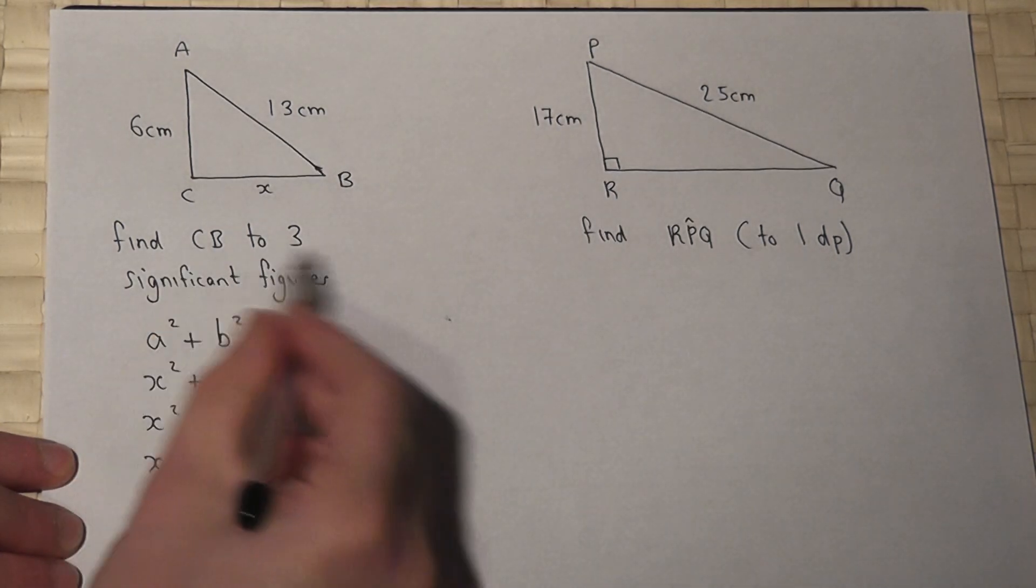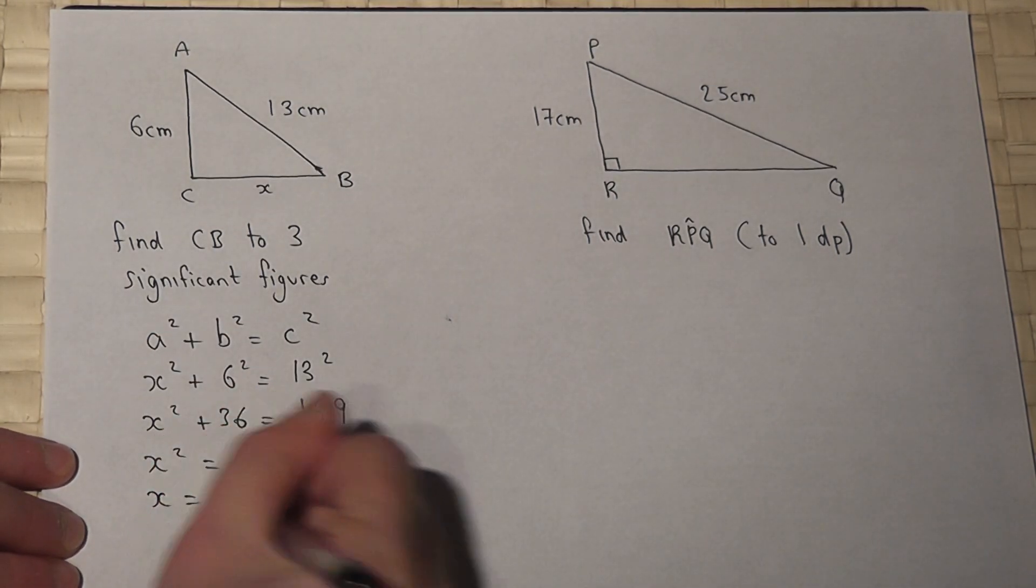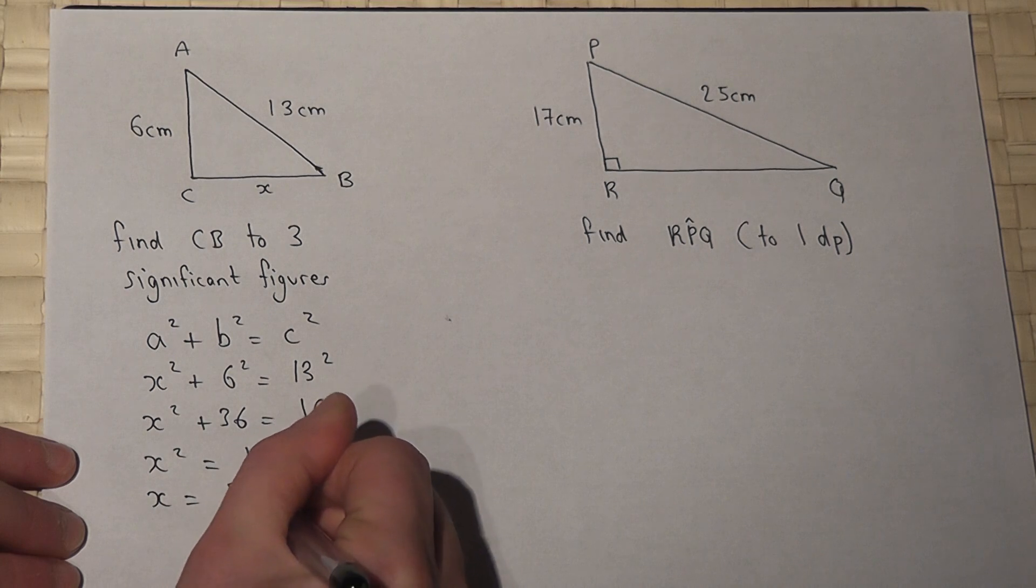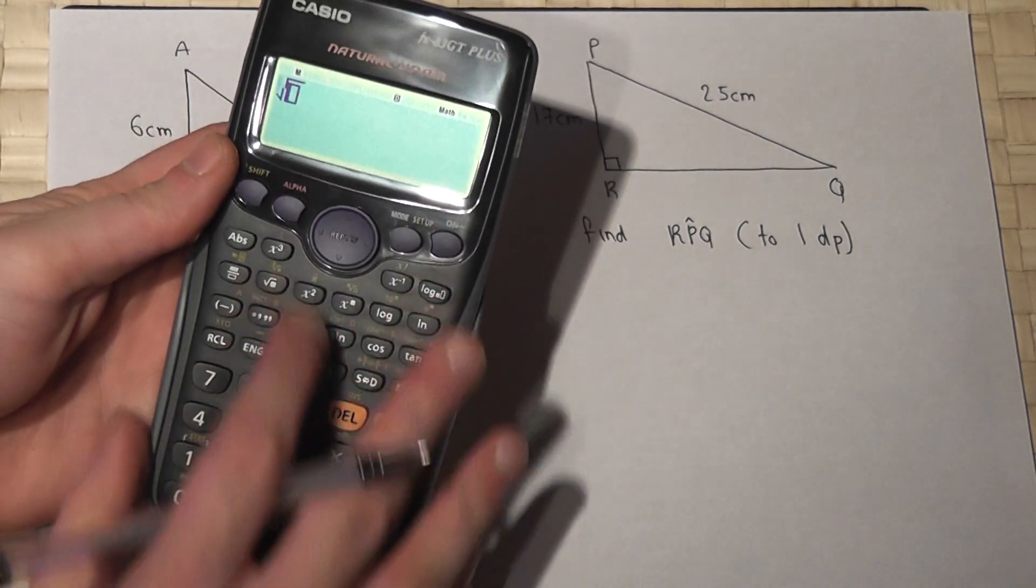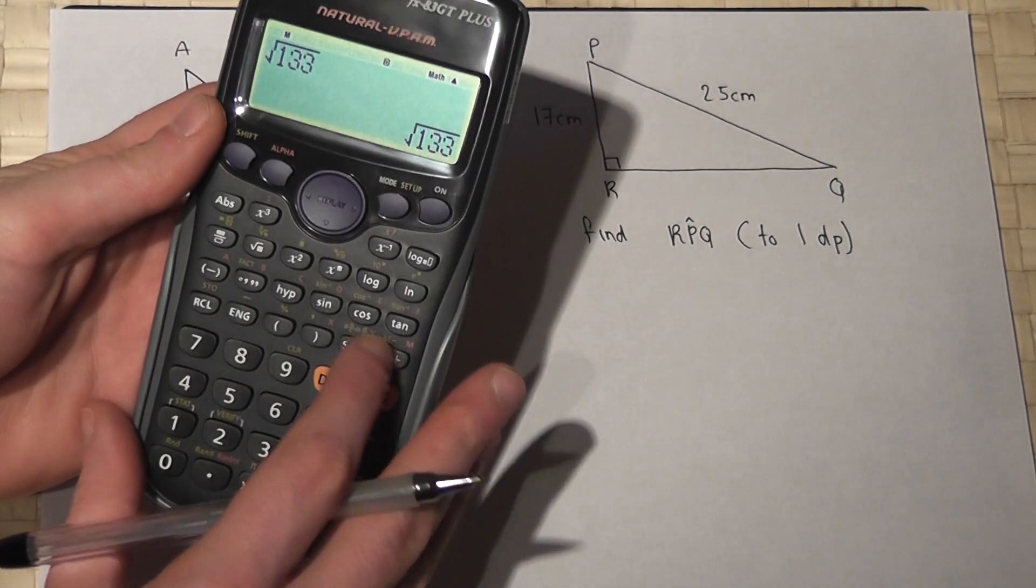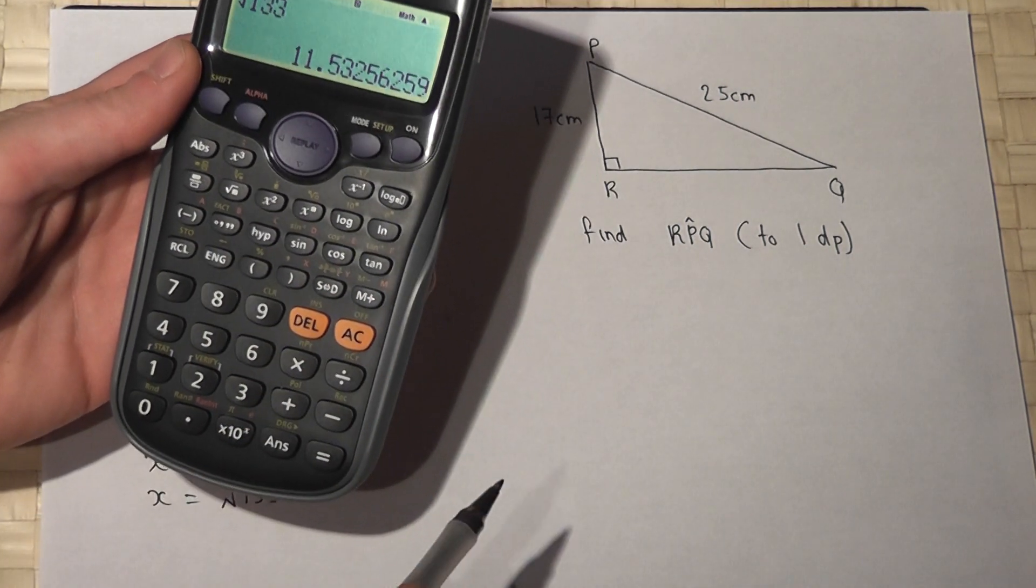So to find x or the length CB I just have to work out the square root of 133 in my calculator. So the square root of 133 is 11.5325.